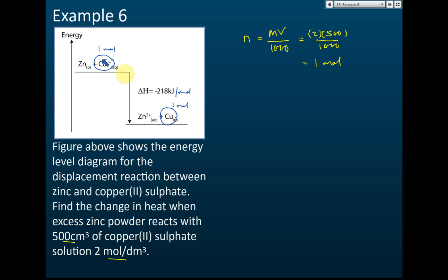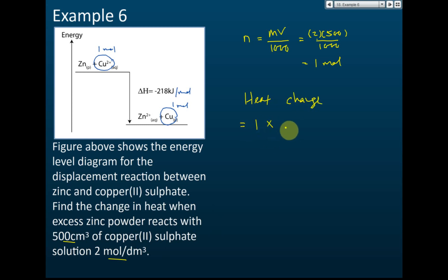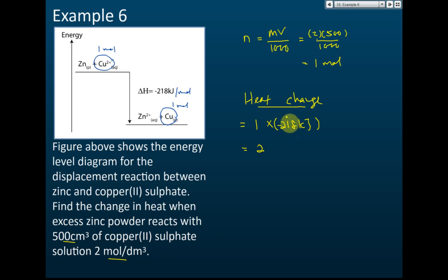Since 1 mole of copper is displaced and the heat of displacement is 218 kJ/mol, the heat change equals 1 × 218 = 218 kJ. Since the question asks for heat change (not heat released), we include the negative sign to indicate heat is released. Therefore, the heat change = −218 kJ.